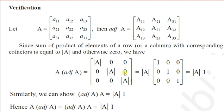Using the second row with its own cofactors gives the determinant of A. When the second row elements are multiplied by third row cofactors and added, the result is zero. In the third row, the two off-diagonal elements are zero and the diagonal gives determinant A. We can factor out |A| from the resulting matrix, leaving the identity matrix. Therefore A·adj(A) = |A|·I. Similarly, adj(A)·A = |A|·I, completing the proof.